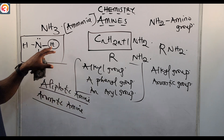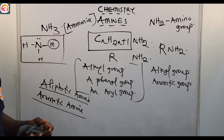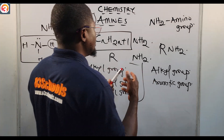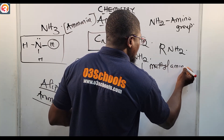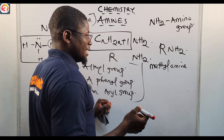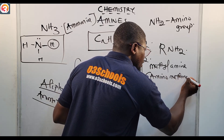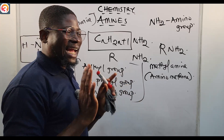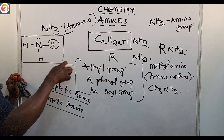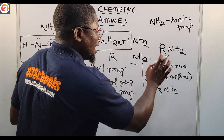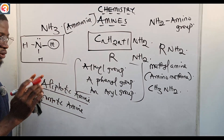An aliphatic amine is formed when hydrogen in ammonia is replaced by an alkyl group. The simplest amine is methylamine, also called aminomethane, with the formula CH₃NH₂. In methylamine, one hydrogen atom in ammonia has been replaced by a methyl group — that is why it is called methylamine.